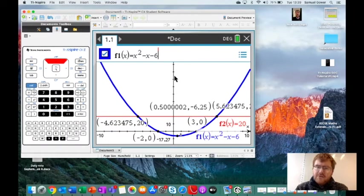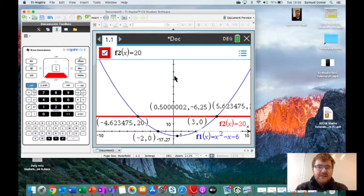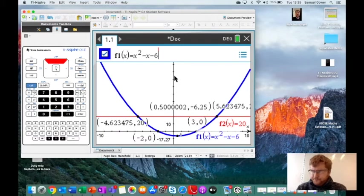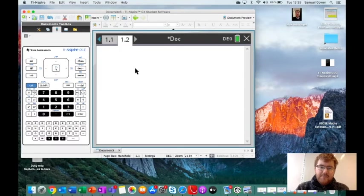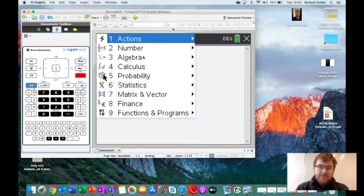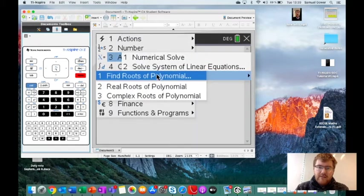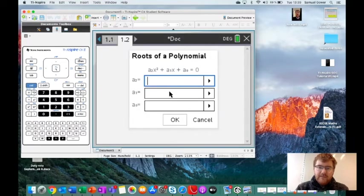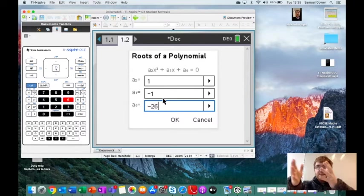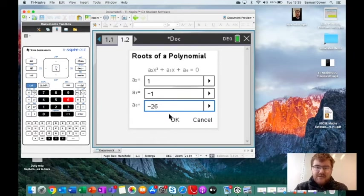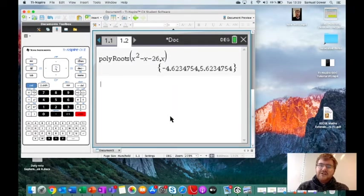You can do this using different methods. We could, for example, go back to our calculator view and use something we've looked at before: go to Algebra, Polynomial Tools, Find Roots of Polynomial. Notice if I type in—by moving the 20 to the left-hand side we get minus 26—and press Enter, you actually get exactly the same answers.